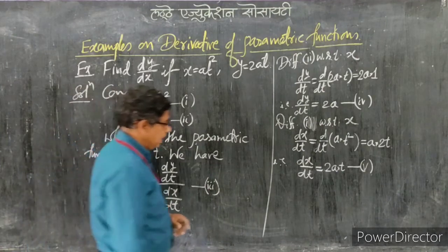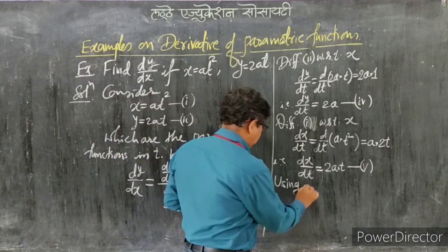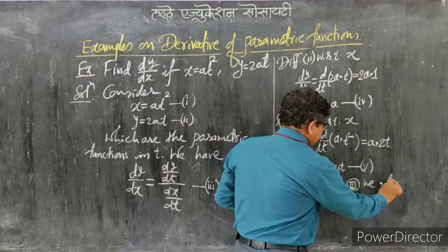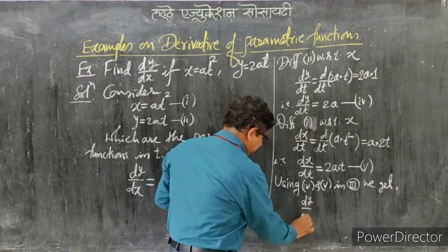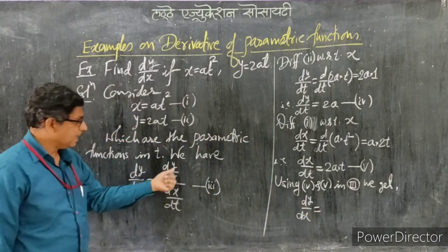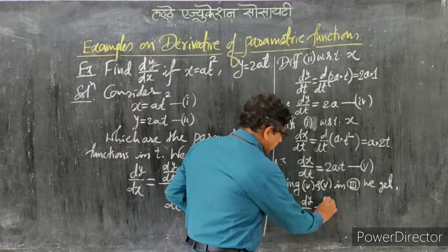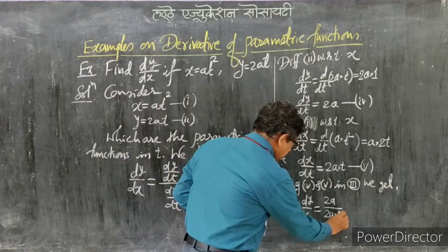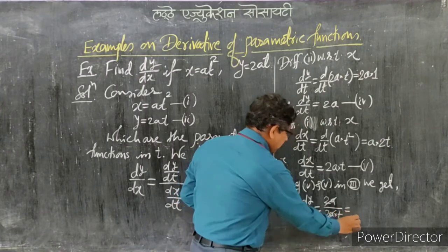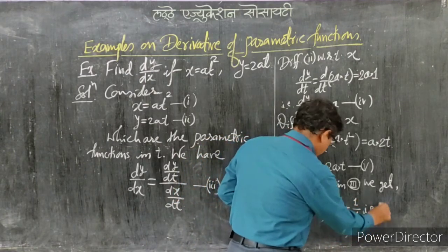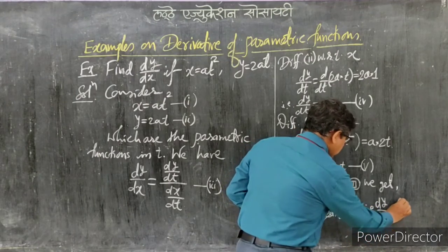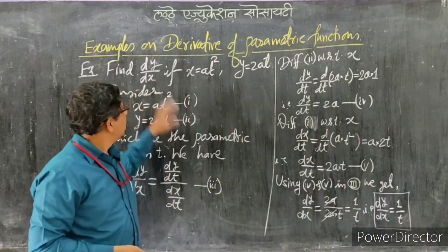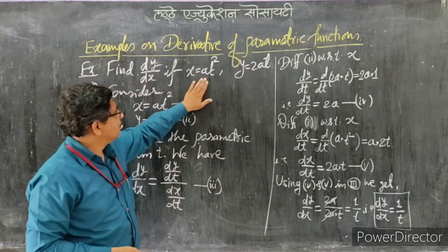Now using equations 4 and 5 in equation 3, we get: dy/dx = (dy/dt) / (dx/dt) = 2a / (2at). The 2a cancels from numerator and denominator, giving us dy/dx = 1/t. This is the final answer for the derivative of the given parametric functions x = at² and y = 2at.